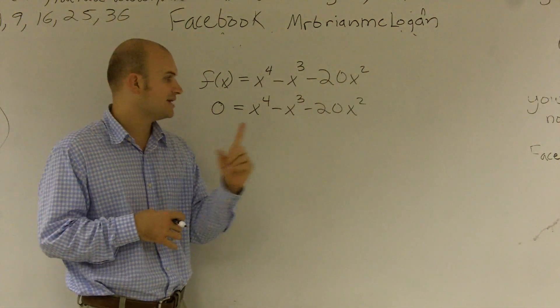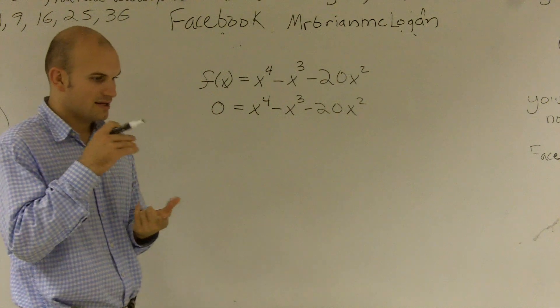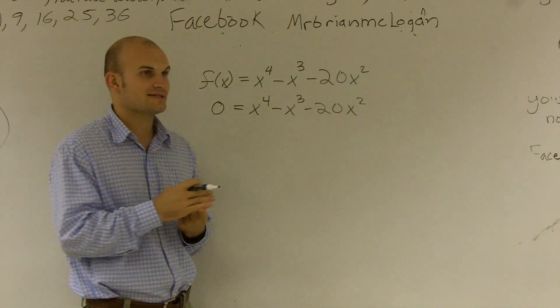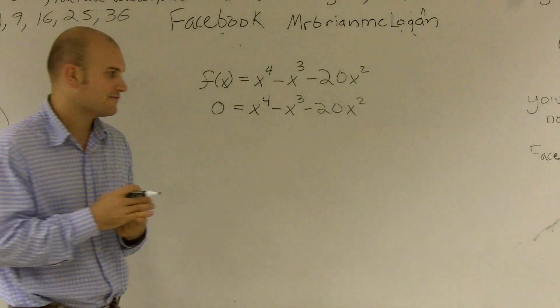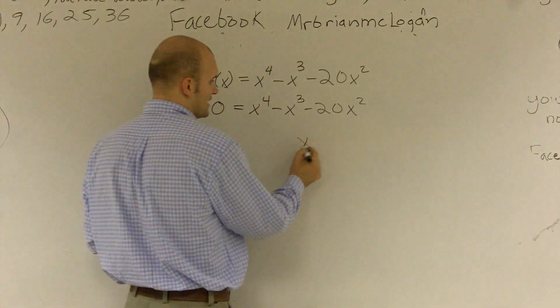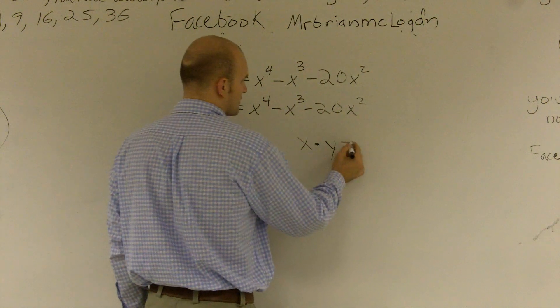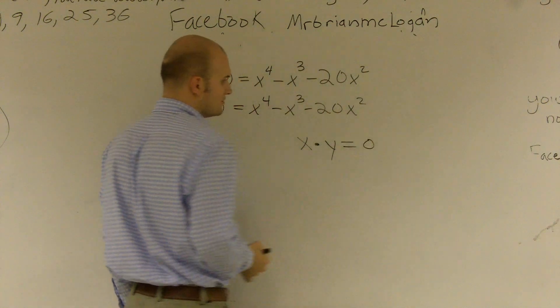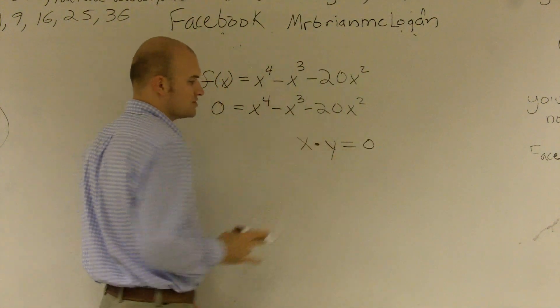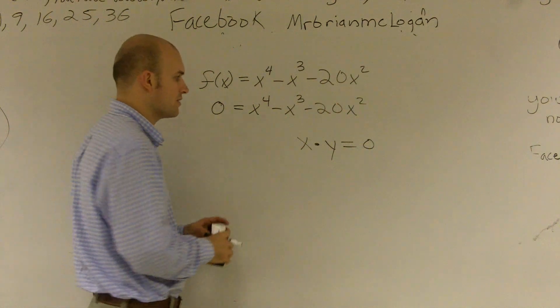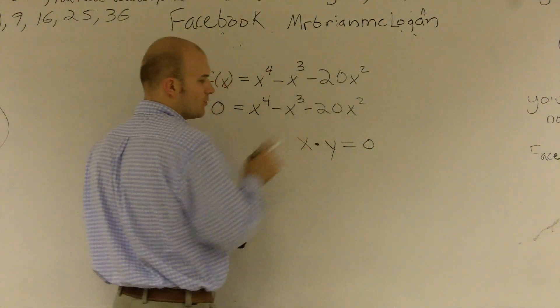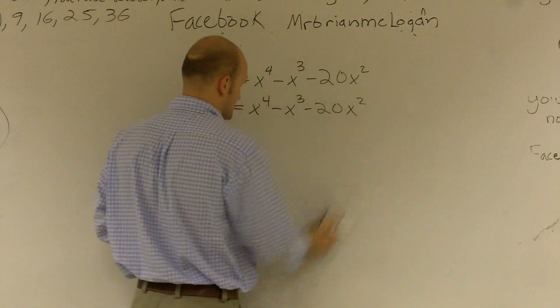If you can't just solve for your single x, we have to look at this and say, is there any way that we can make this a set of linear factors? Because if I know I can get it to a multiplication problem where x times y is going to equal 0, then I know that one of those two has to equal 0, and I can solve for them. Either x is equal to 0 or y is equal to 0.